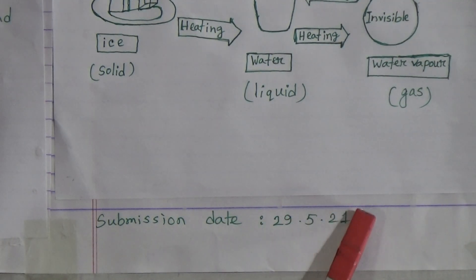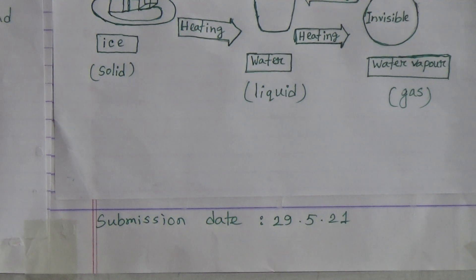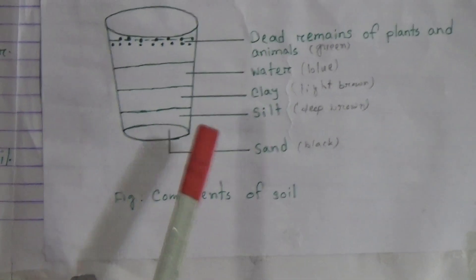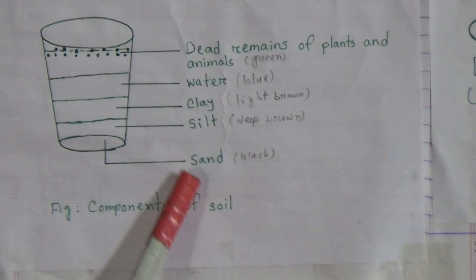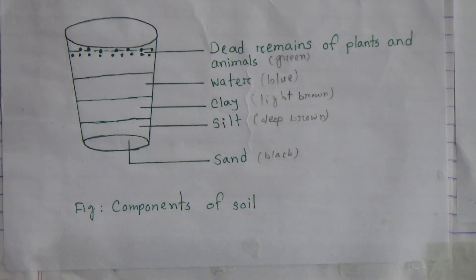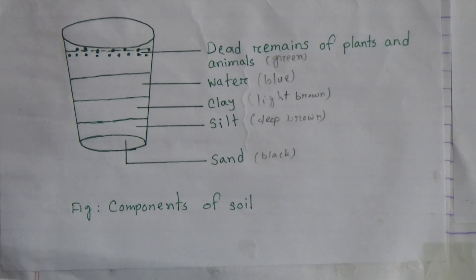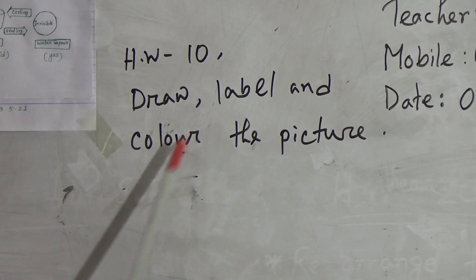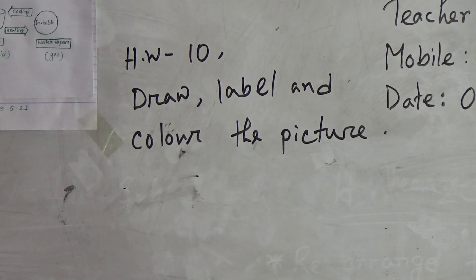My dear students, another reminder: draw, label, and color is your HW topic. You have to draw it in your HW copy on the last white page. Your today's HW number is 10 and your HW topic is draw, label, and color the picture of components of soil.